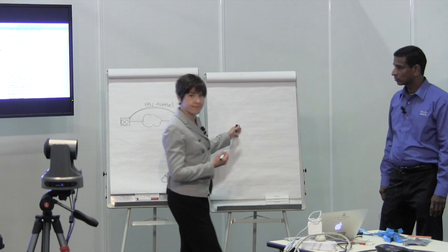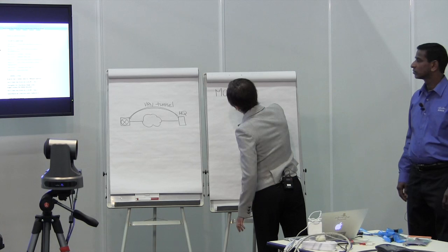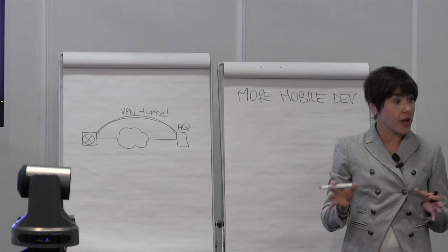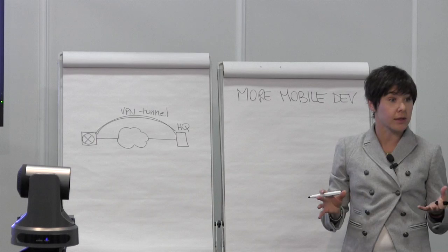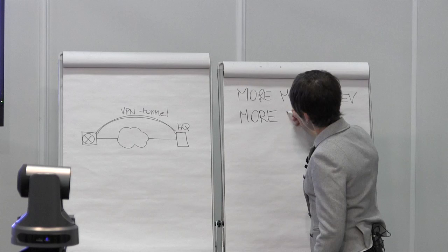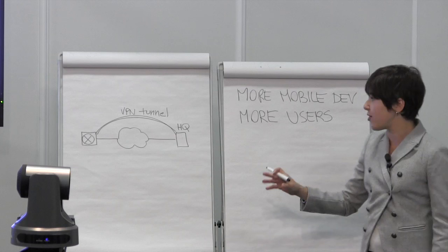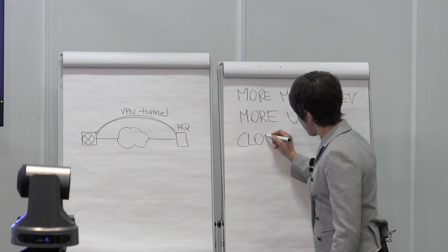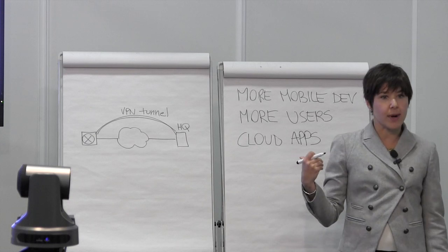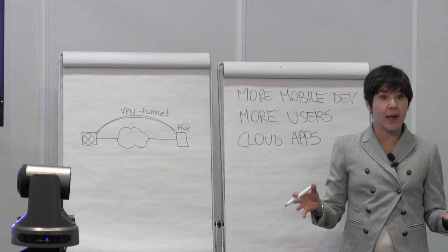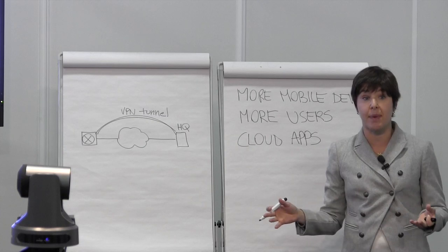First, we have more users. More users are actually served at the branch offices today, whether it is employees, whether it is partners or customers. Companies are also trying to improve productivity of their employees by leveraging applications hosted in the cloud. All these trends are putting a tremendous pressure on the branch in terms of bandwidth requirement, while employees expect LAN-like experience for applications whether hosted locally or in the cloud.